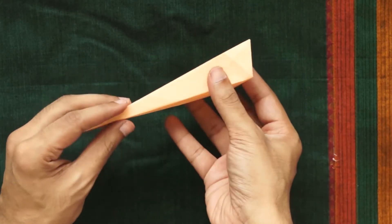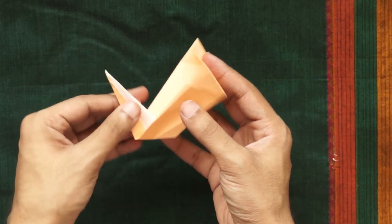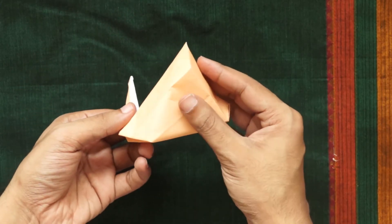Keeping the box structure at the back secure, inside reverse fold the front pointed end upwards again using the creases you created in the previous step. You can start to see the shape of the flame forming.